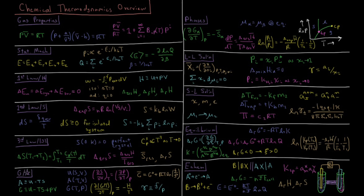We move on to define the Gibbs and Helmholtz energies. Helmholtz energy is internal energy minus temperature times entropy. Gibbs energy is internal energy minus TS plus pressure times volume. All of these thermodynamic state functions have natural variables: entropy and volume for internal energy, temperature and volume for Helmholtz energy, and temperature and pressure for Gibbs energy. These give rise to Maxwell relations, which occur due to the equality of second mixed partial derivatives, often relating something easy to compute — like the derivative of pressure with respect to temperature — to something harder to compute, like the derivative of entropy with respect to volume.